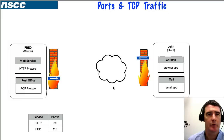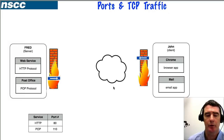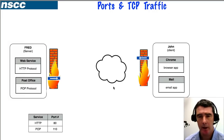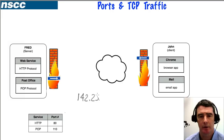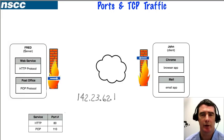Here we're going to look at a simple scenario where packets are traveling from a client computer through firewalls and to web and post office services. We've got a couple of computers and we're going to call one John and the other Fred, which simply represent IP addresses, to keep things simple instead of using actual numeric addresses.